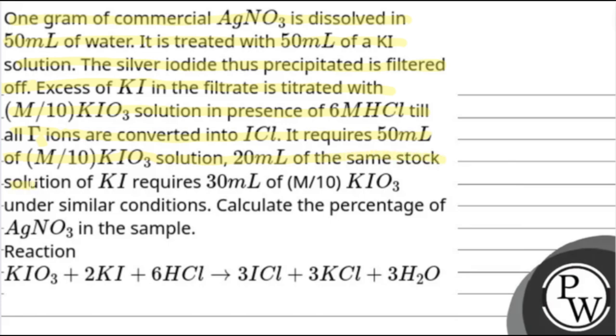20 ml of the same stock solution of KI requires 30 ml of M/10 KIO3 under similar conditions. Calculate percentage of AgNO3 in the sample. The reaction is KIO3 + 2KI + 6HCl gives 3ICl + 3KCl + 3H2O.